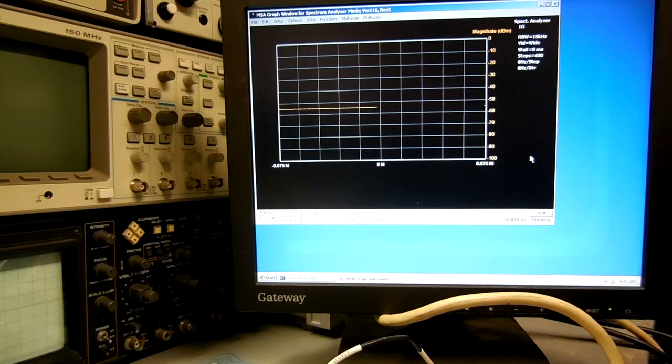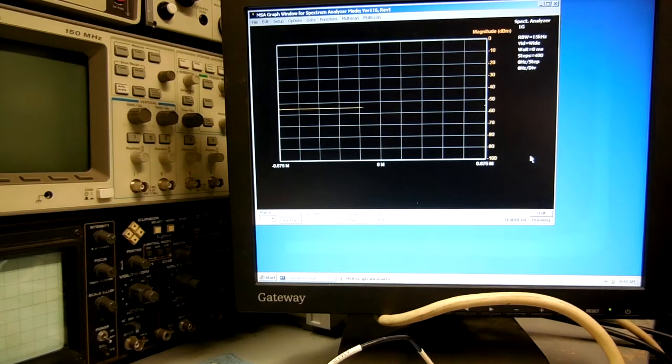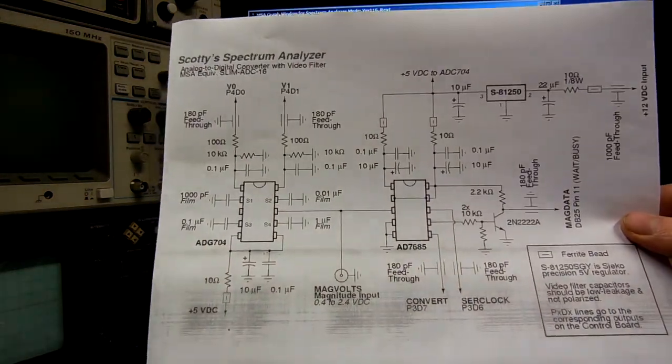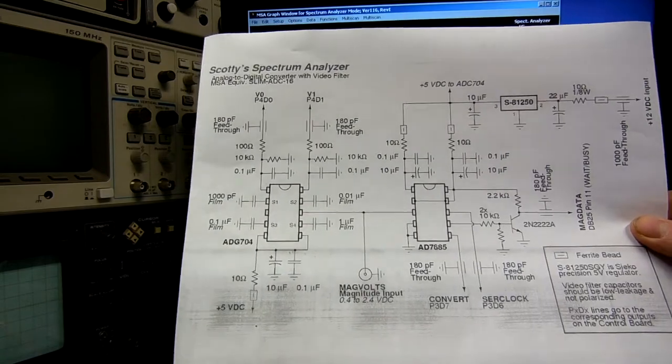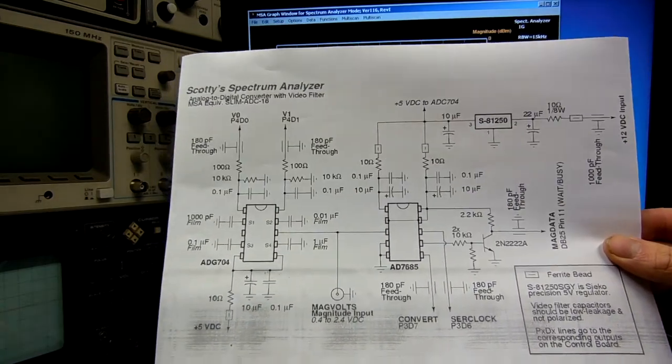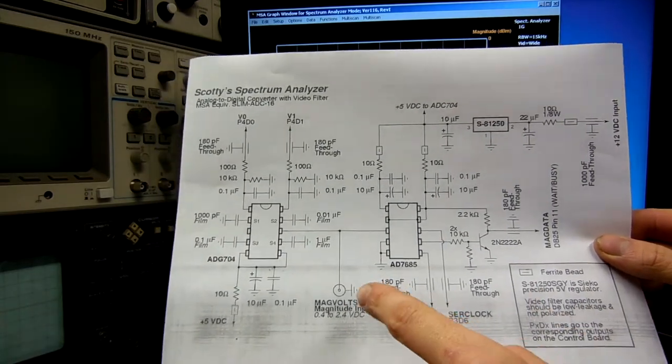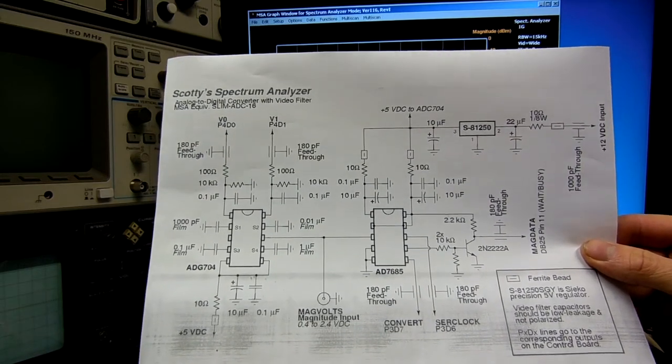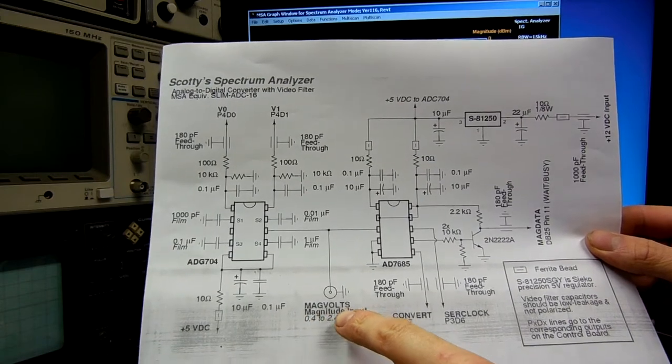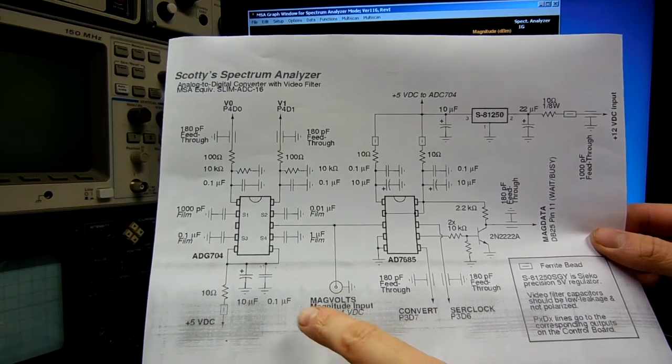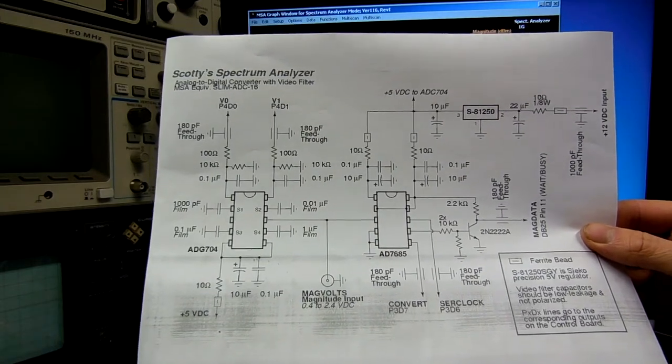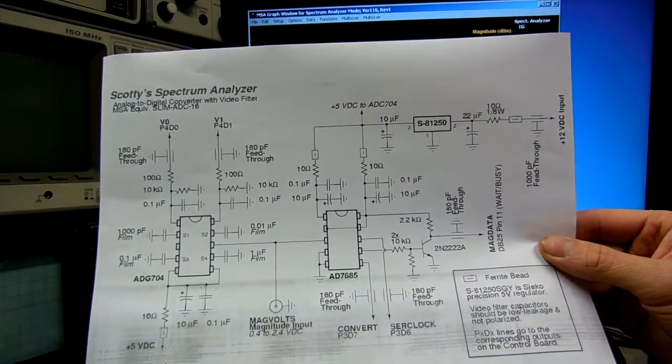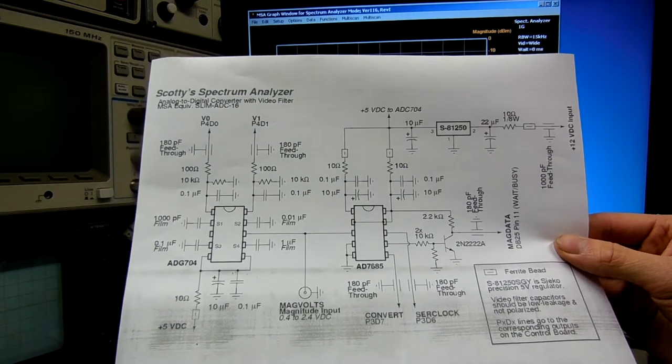This is an overview of the analog-to-digital converter for the Scottie Spectrum Analyzer. This is the final device in the IF chain that actually converts the signal into a digital data stream. It's based around a 16-bit analog device's AD7685 analog-to-digital converter. It takes the magnitude voltage output from the logarithmic detector stage, which is usually 0.4 to 2.4 volts DC, and converts it into a 16-bit serial data stream which is read by the computer via the parallel port.